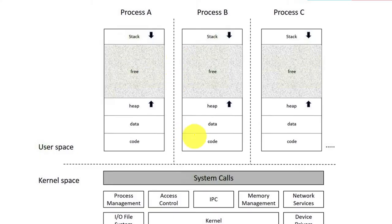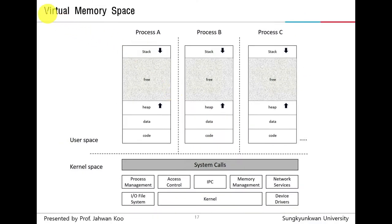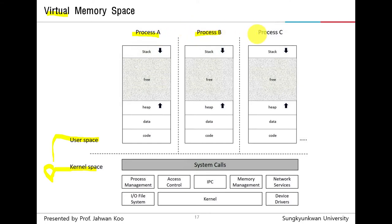This is a picture showing the structure of virtual memory space. When the system boots, the kernel is loaded into the kernel memory space. If you run a program, the program is loaded into the user memory space. The program loaded in memory becomes a process. Linux can have multi-processes. From the processor's point of view, sometimes a process can run in user space, and sometimes in kernel space.